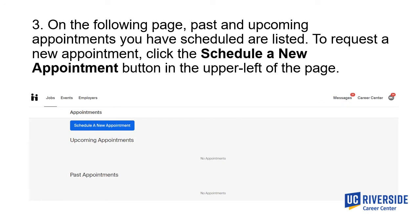On this appointments page, any past or upcoming appointments that you have scheduled will be listed here. If you haven't used our services before, you will see this section with no appointments underneath upcoming and past appointments — that's normal. In order to request a new appointment, click the 'Schedule a New Appointment' button in the upper left corner of the page.